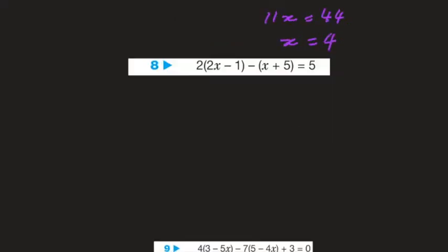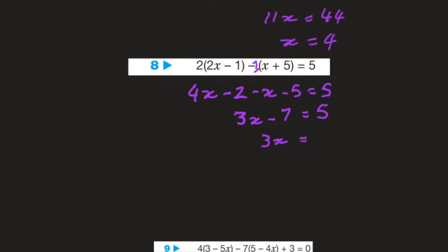It's a similar sum. 2 times 2x is 4x, 2 times minus 1 is minus 2. Once again, there's just a negative — so imagine there's a negative 1 outside: negative 1 times x is negative x, and negative 1 times positive 5 is negative 5, and that equals 5. Gathering like terms: 4x minus x is 3x, minus 2 minus 5 is minus 7, equals 5. Adding 7 to both sides, 3x equals 12, therefore x equals 4, dividing both sides by 3.